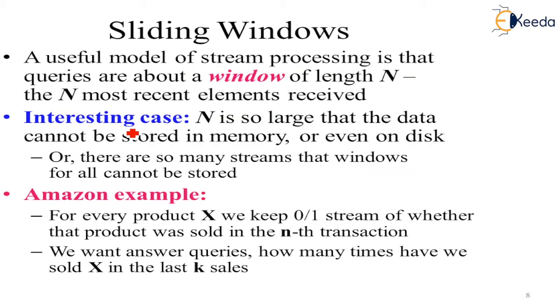The simple solution is we can go over the sliding window. A useful model of stream processing is that queries are within a window of length N, and the N most recent elements are received. So we have large data which is continuously coming. We will select a specific window. For example last 10 minutes window, last 1 hour window, maybe last 1 day window, last 1 month window, last 1 year data. So we will select specific window which is from this point which is at present till the last one. Interesting case is N is so large that the data cannot be stored in memory or even on disk, or there are so many streams that windows for all cannot be stored.